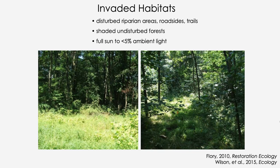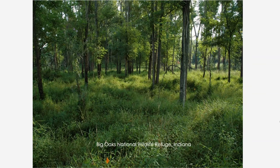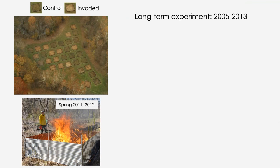Microstegium can invade a wide range of habitats from disturbed riparian areas along roads and trails to shaded undisturbed forests with less than 5% light. We have experimental evidence that it can reproduce and produce viable seed at roughly 5-7% light. Across these habitats we see big impacts of the invasion. This photo from Big Oaks National Wildlife Refuge in southern Indiana shows a dense invasion in an open broken-canopy woodland. Early on with support from the Nature Conservancy starting in 2004-2005, I set up what eventually became a long-term experimental introduction.